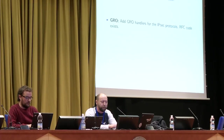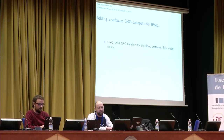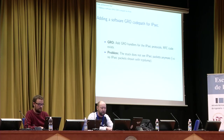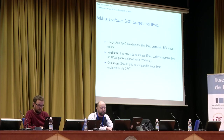The next topic is Generic Receive Offload — we want to add GRO support for IPsec. We just need to add handlers for IPsec protocols. I did that, the code is there and works pretty well. But there is one minor problem: the stack no longer sees IPsec packets. Tools like tcpdump only show cleartext packets, and IPsec packets are completely gone from the Rx part. The question is: should we make this configurable, or can we just switch the default to GRO? We're not sure how users would react if they update their kernel and suddenly all IPsec packets are gone — it could be a bad experience.